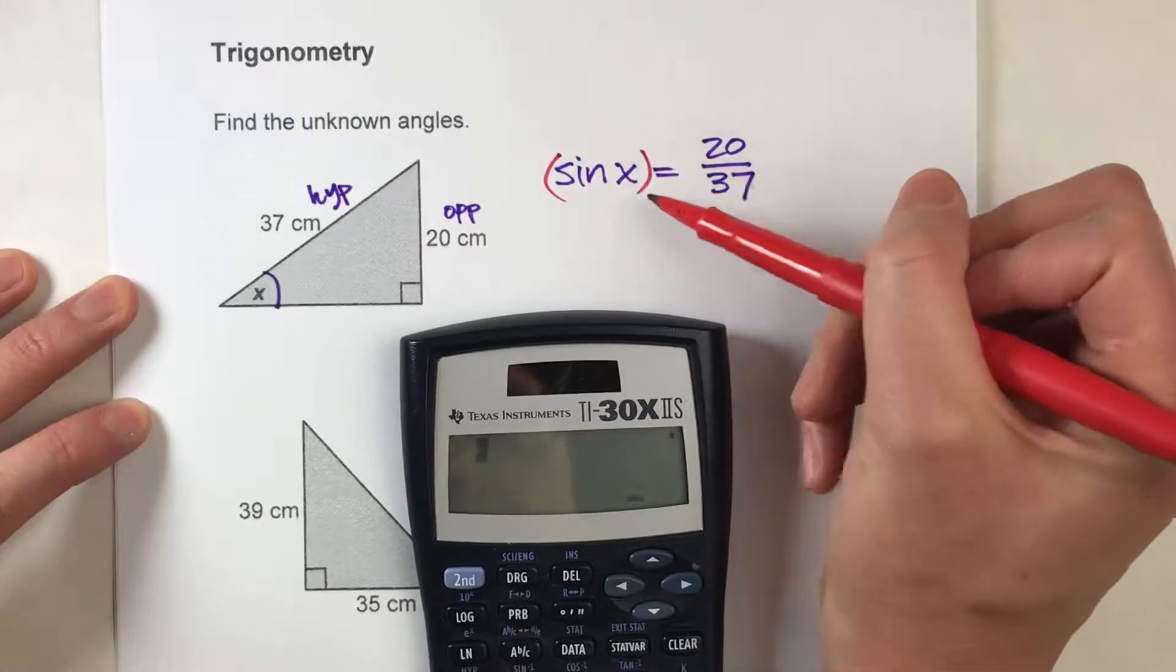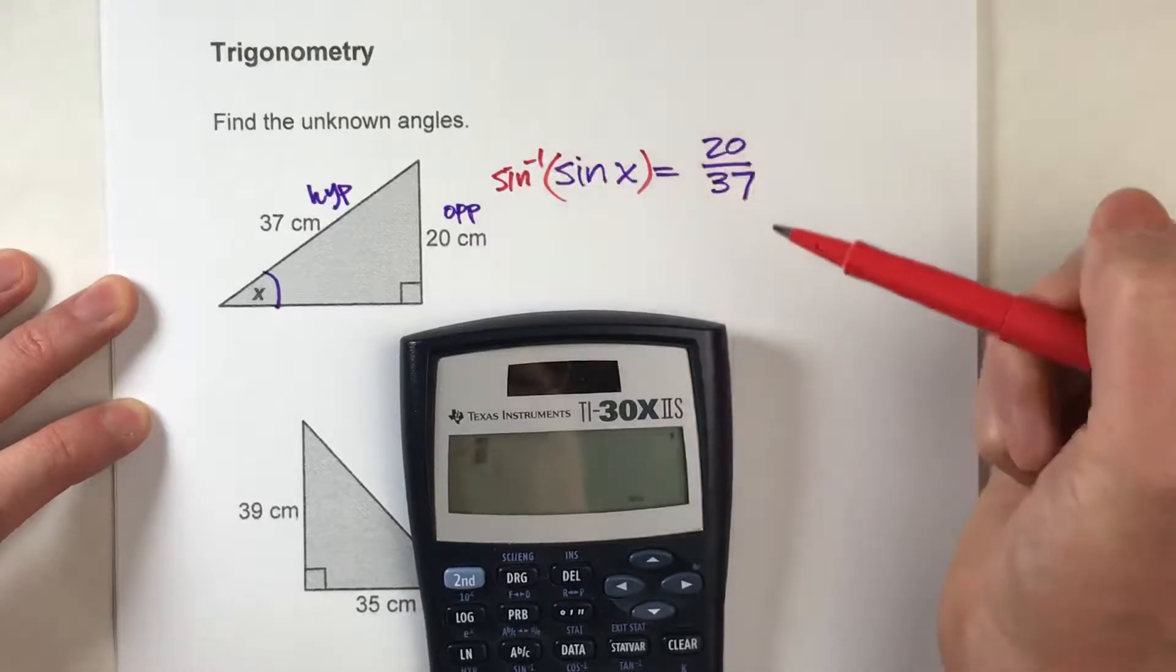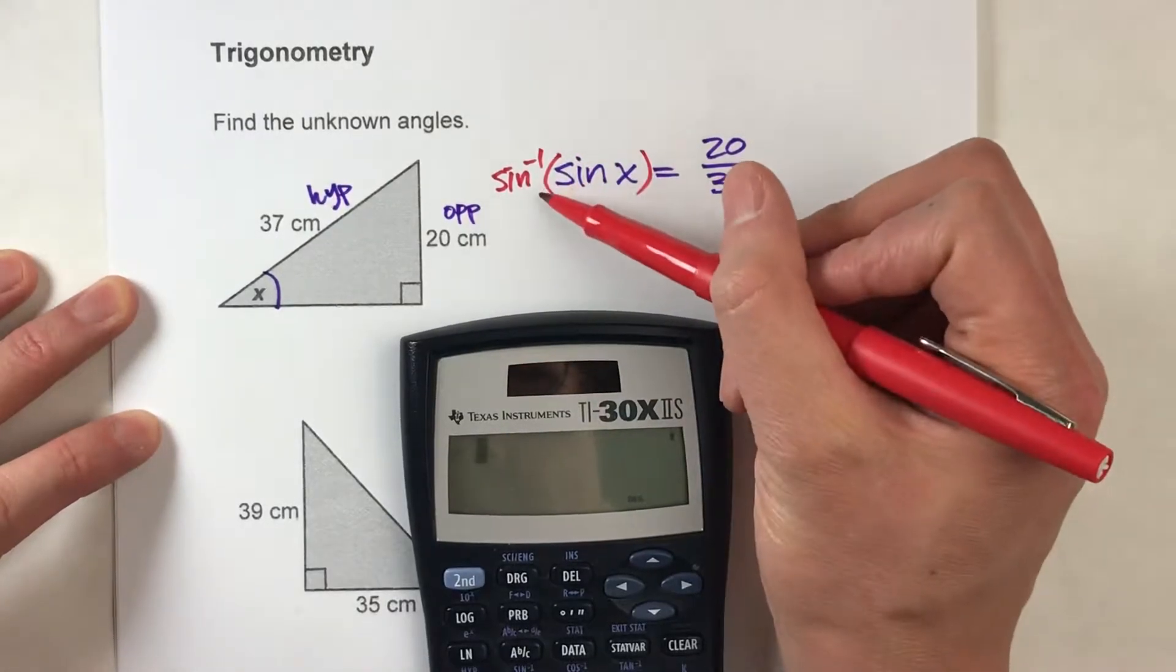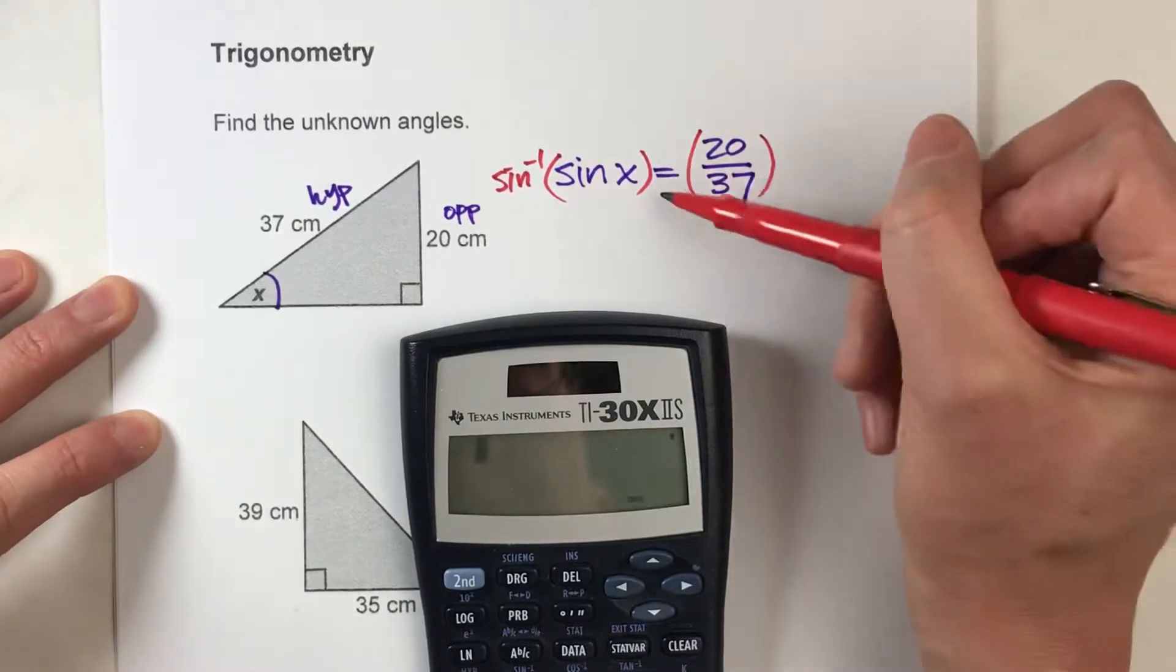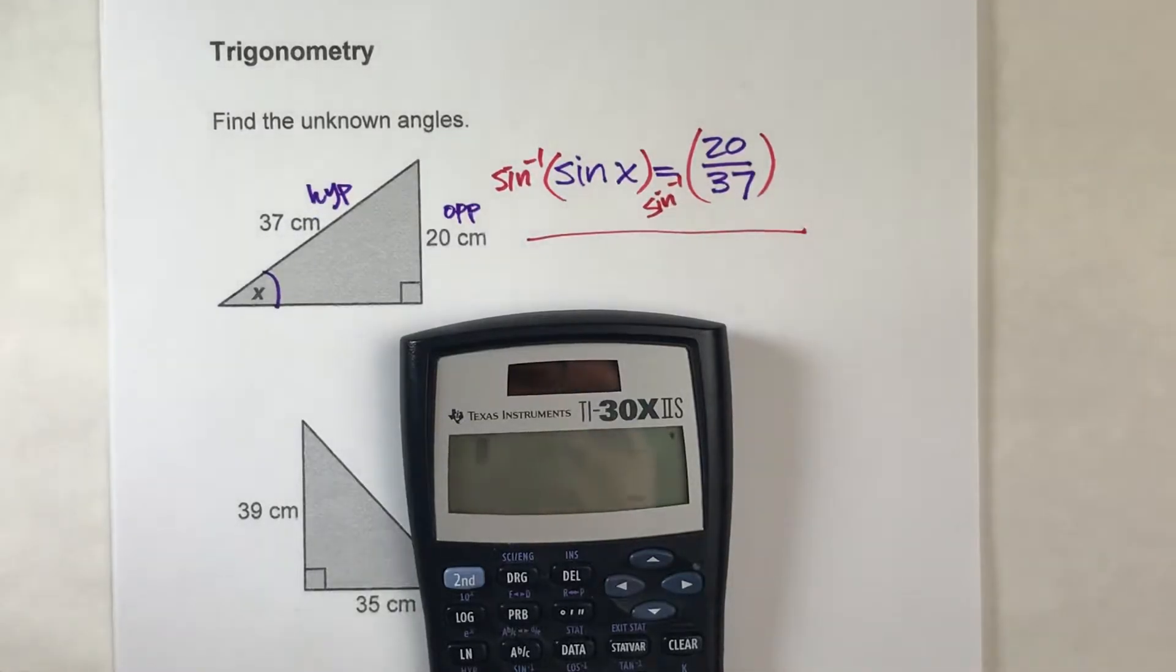It turns out, the opposite of taking the sine of an angle is taking the inverse sine of the angle. And what you do to one side, you have to do to the other. And it's a little messy, but that's what we're doing to both sides.